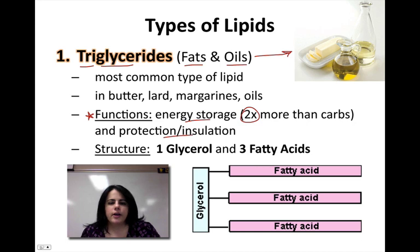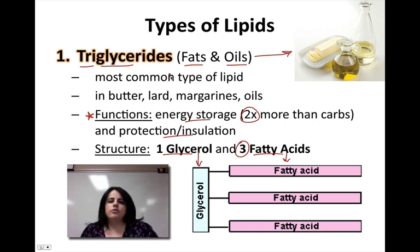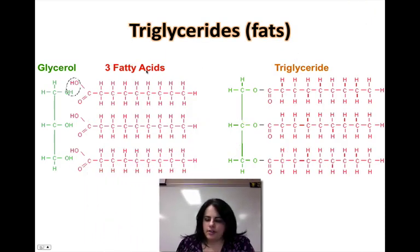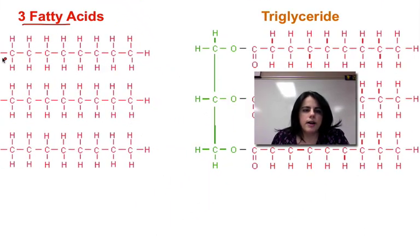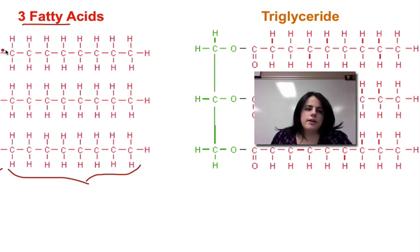The structure of a triglyceride — break down the word — three of something. And the three of something are three fatty acids. They're going to be attached to something called a glycerol. I'd like to use my hand model: I have the glycerol and the three fatty acids for my three fingers. Here we have our three fatty acids, all in red. Remember, fatty acids have a hydrocarbon chain and then a carboxyl head. The green thing is a glycerol. When three fatty acids attach to a glycerol, we get a triglyceride — and those are your fats and oils.